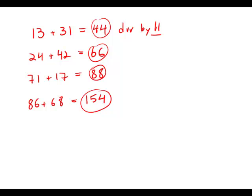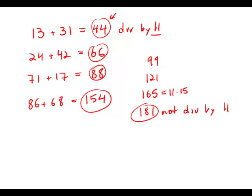Now, if we look at the answer choices, we've already gotten 44, so we know that's possible. 99 is divisible by 11. 121 is divisible by 11. 165 is 11 times 15, that's divisible by 11. But 181 is not divisible by 11, and it turns out that's the only one that you cannot make in this sum. That is answer choice A.